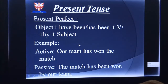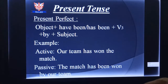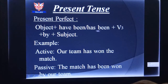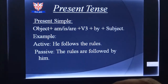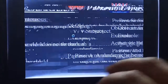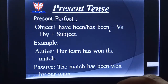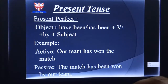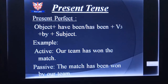If we compare all three structures, the common pattern is: the subject always becomes the object in passive, and the object becomes the subject. The auxiliary verbs differ: for present simple it is am/is/are; for present continuous it is am being/is being/are being; and for present perfect it is have been/has been. The verb is always V3. The same logic applies to past and future tenses as well.